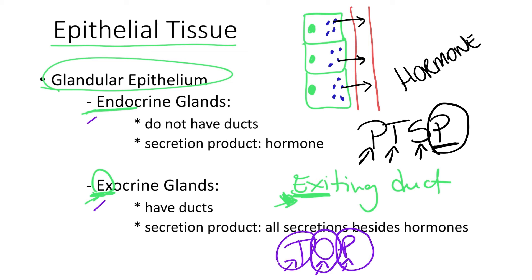In case you're wondering what the endocrine and exocrine secretions of these TOP organs are — here they are. Testis: exocrine secretion is sperm, and an example of endocrine secretion is the hormone testosterone. Ovaries: exocrine secretion is the egg, and an example of endocrine secretion is the hormone estrogen. Pancreas: exocrine secretion is pancreatic juice, which is composed of fluid and digestive enzymes, and examples of endocrine secretion of the pancreas are the hormones insulin and glucagon.